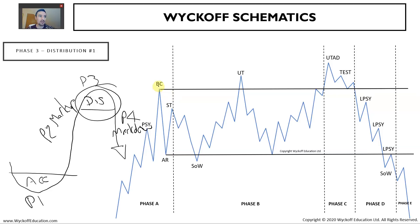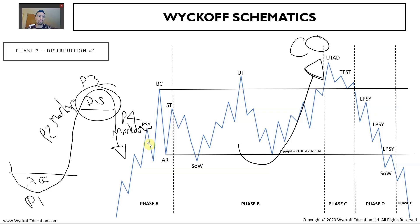In the distribution schematic we've got our buying climax, automatic reaction, secondary test, a sign of weakness in phase B, and an upthrust in phase B. Phase C is the final last hurrah - it gets very climactic, and this is where the CO distributes right at the top. They would also have been selling at the buying climax, where the volume tends to get very, very climactic in nature.